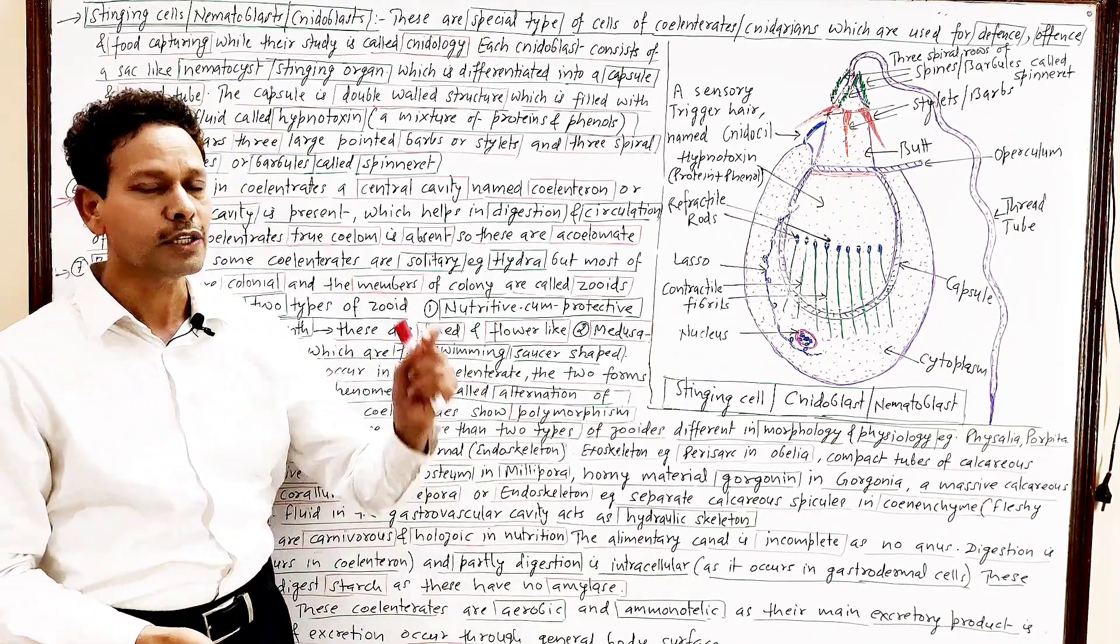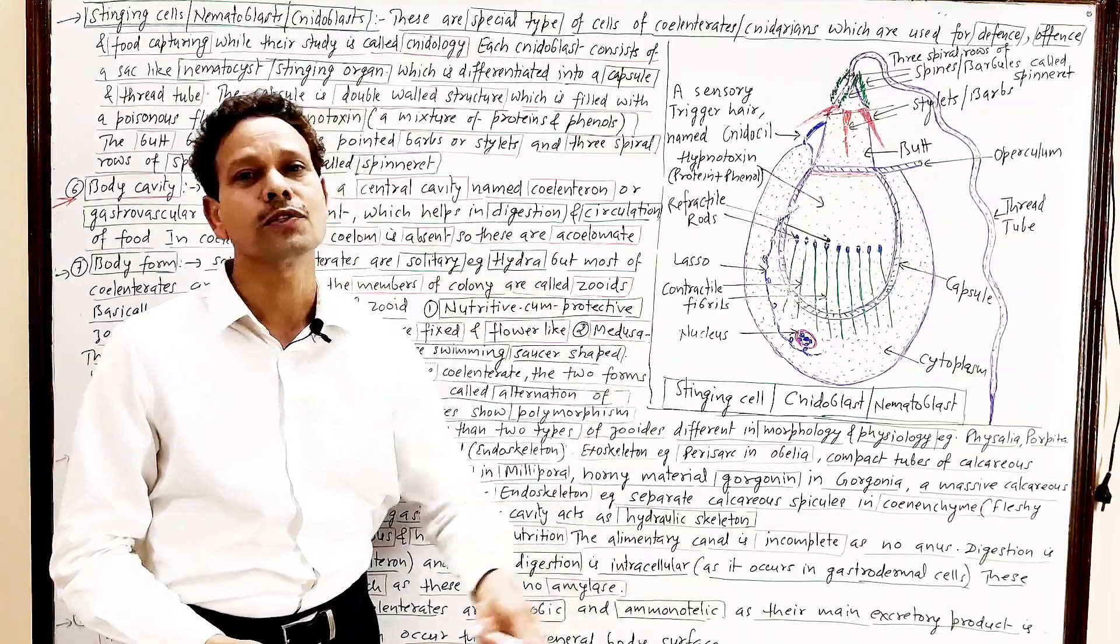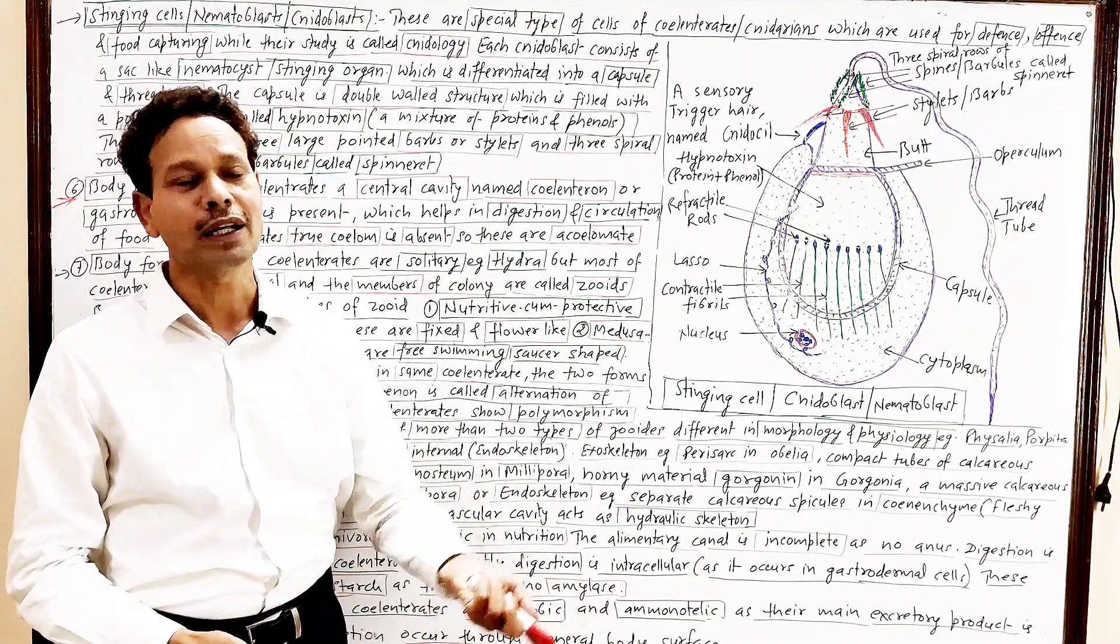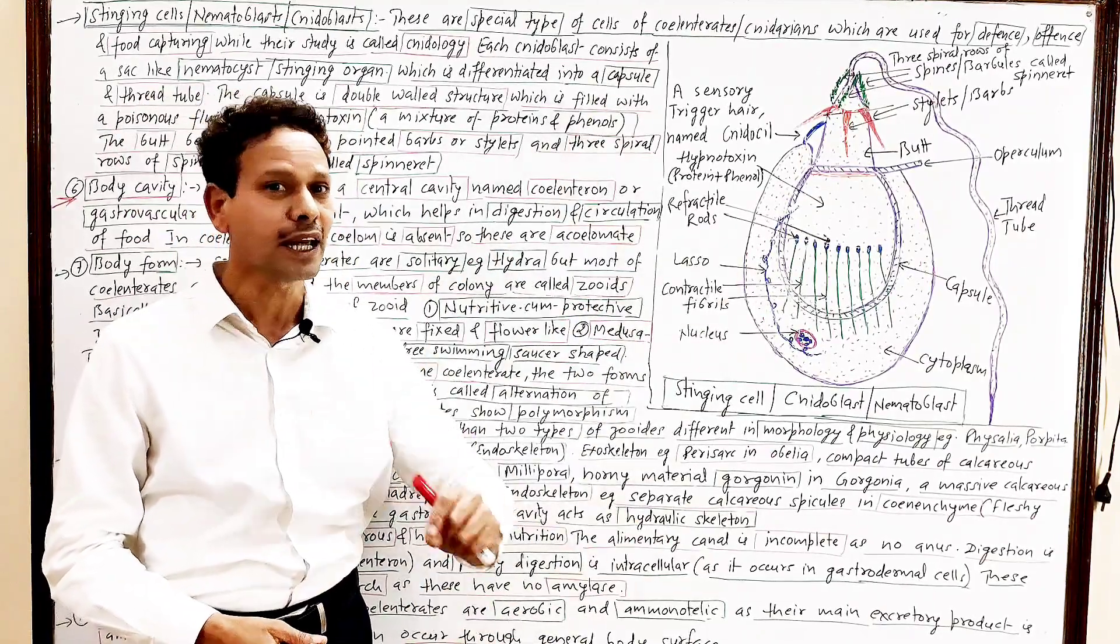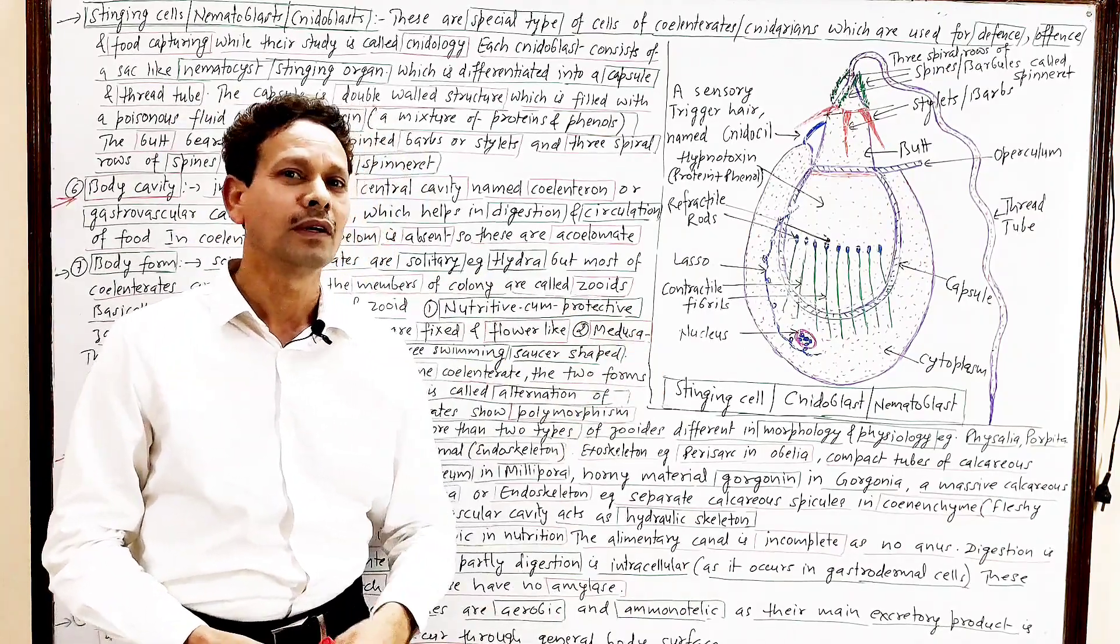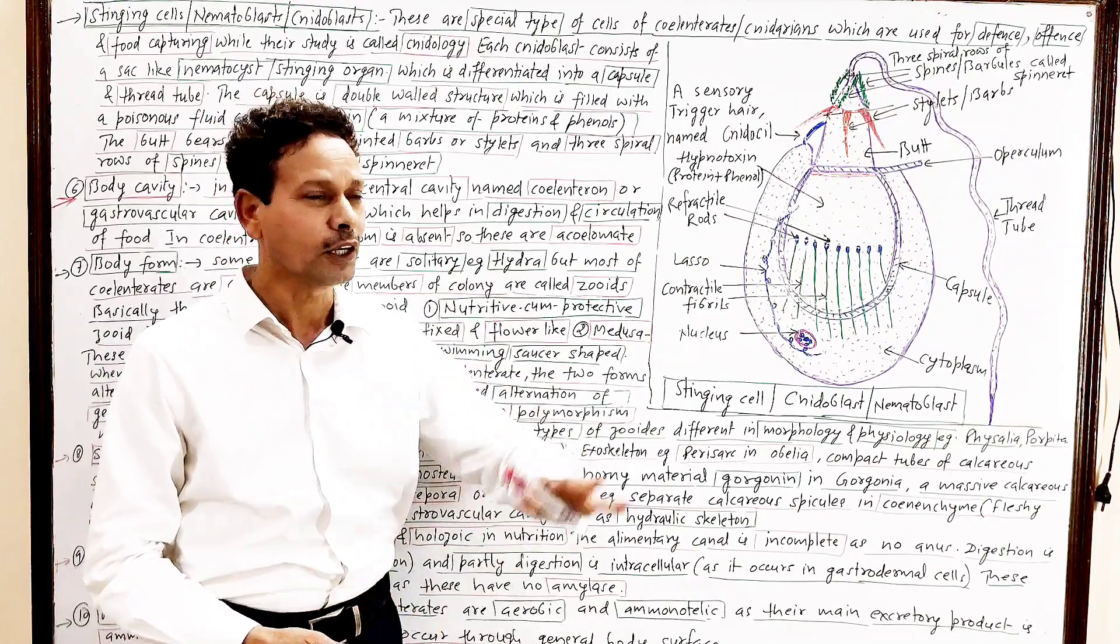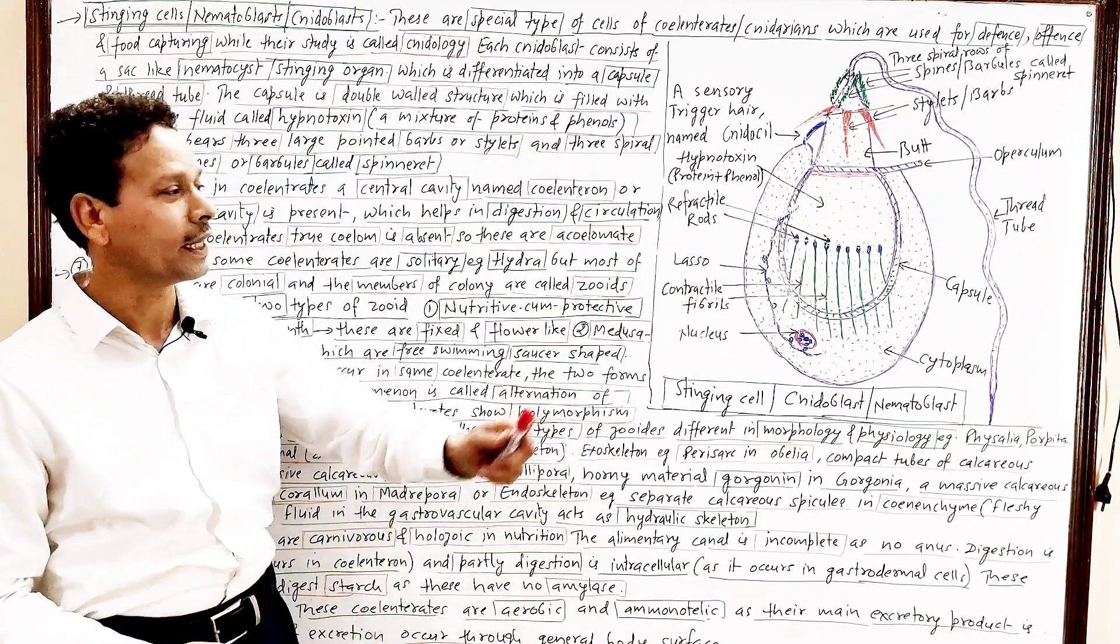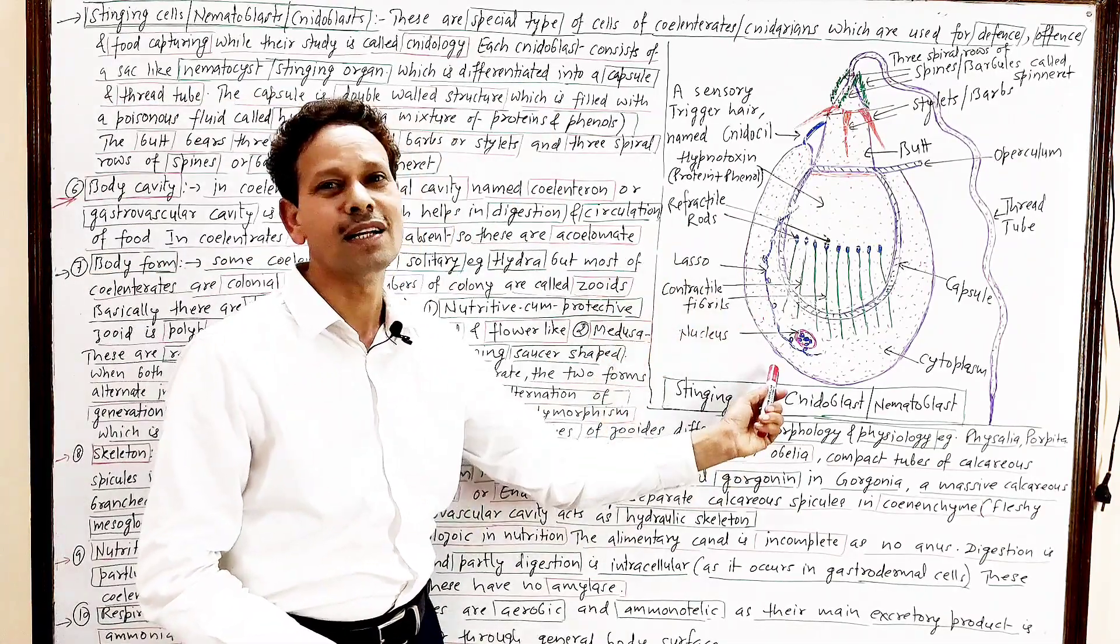Dear students, we have already started this topic, phylum Coelenterata. This is second lecture and in this lecture we will discuss some more important characteristic features of phylum Coelenterata. In today's lecture, very important topic that is stinging cells.